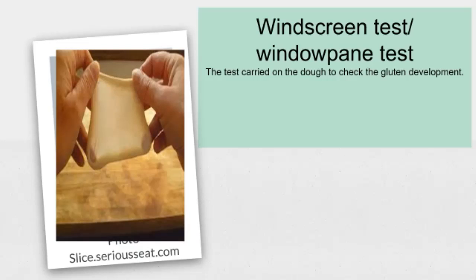Next word is window pane test. As shown in the picture, a small quantity of dough is stretched between the fingers. If the dough doesn't tear in between, it is the indication of proper gluten development.